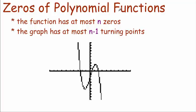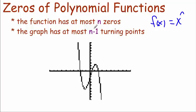I want to talk about those power functions just like we were discussing in the last video. A power function is something like f(x) = x to the nth power. That nth power tells us a lot about what's happening with our function and its graph. With a power of n, our function is going to have at most n zeros — so n x-intercepts — and at most n minus 1 turning points. So x squared would have at most two zeros and at most one turning point.